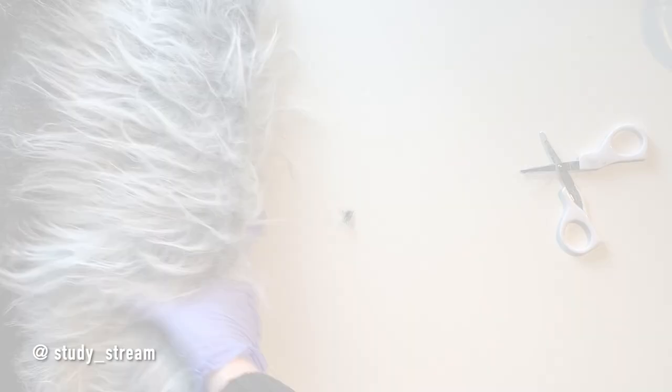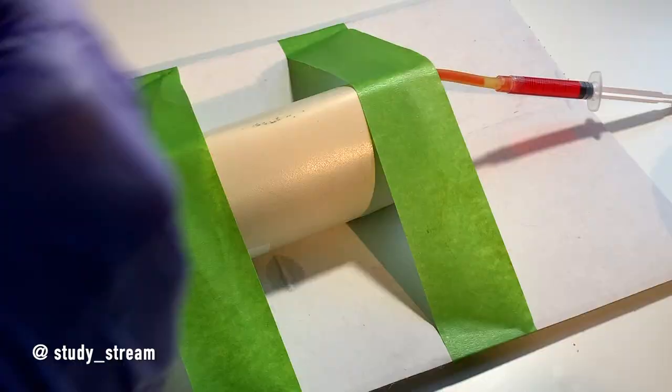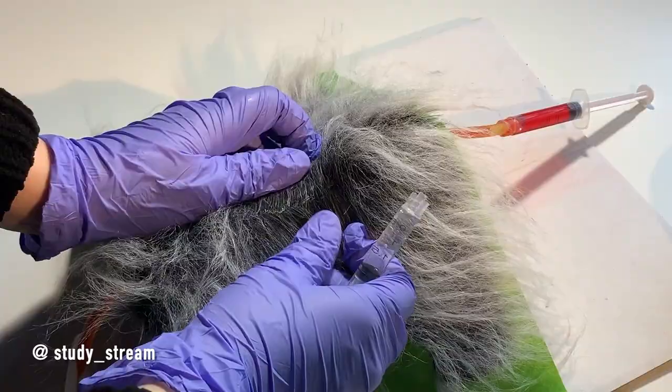To practice on a furry arm, you can attach or drape a piece of faux fur fabric over the venipuncture model. Wetting the fur with alcohol, or in this case some water, can help you feel and see the vein easier.